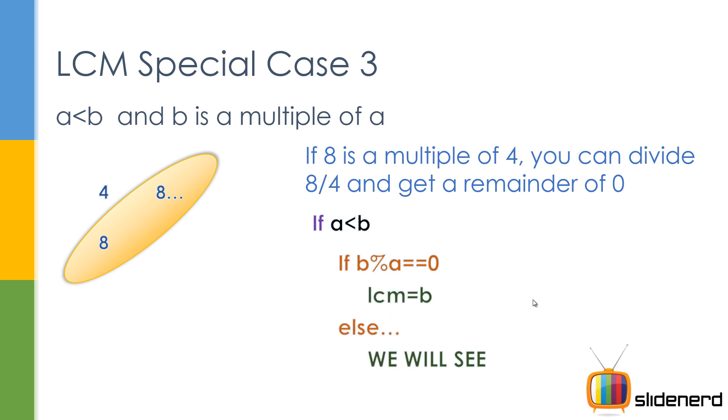This is how you do it. You say if A less than B. And then, once you know that A is less than B, you have to test for the multiple conditions. That means you take the larger number, divide the smaller number by it and check the remainder. If it is perfectly divisible, the remainder is gonna be 0.